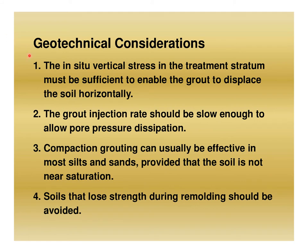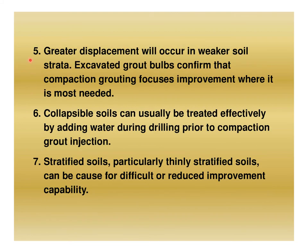Geotechnical considerations for compaction grouting include: (1) the in-situ vertical stress in the treatment stratum must be sufficient to enable the grout to displace the soil horizontally; (2) the grout injection rate should be slow enough to allow pore pressure dissipation; (3) compaction grouting can usually be effective in most silts and sands, provided the soil is not near saturation; (4) soils that lose strength during remolding should be avoided; (5) greater displacement will occur in weaker soil strata; and (6) excavated grout bulbs confirm that compaction grouting focuses improvement where it is most needed.